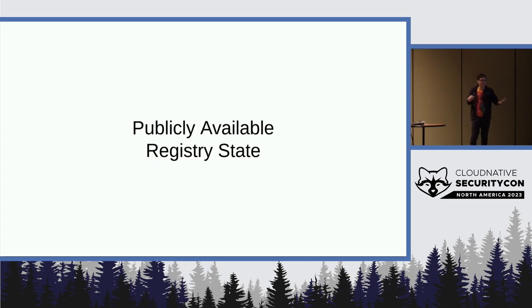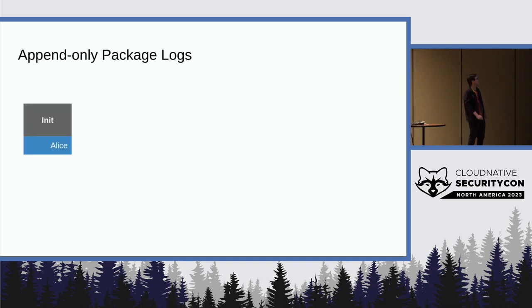And it implements these three different steps we were just talking about, and we're going to try to burn through explaining them. The first part of it needs to have publicly available state. People need to be able to download information about what the registry knew about at different points in time. And it does that by representing every package as an append-only log of signed records.